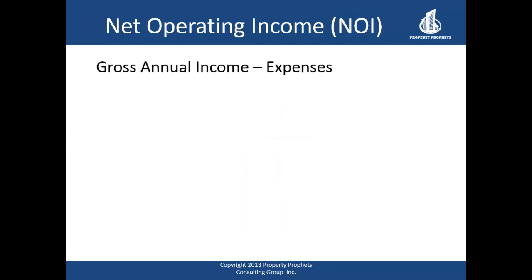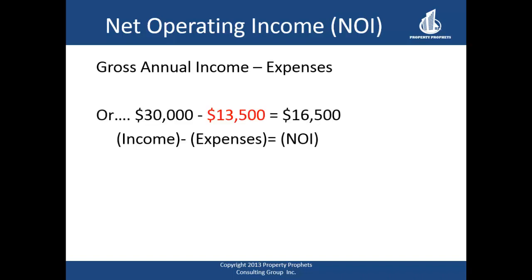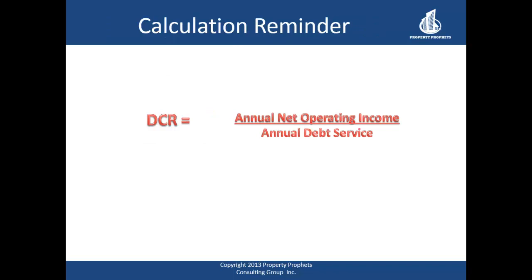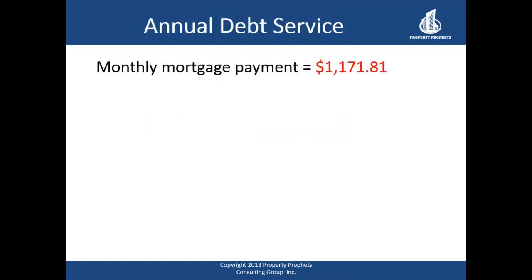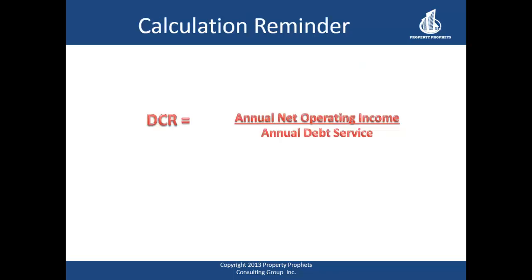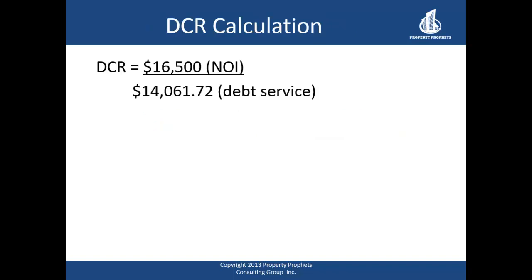Taking our annual gross rent of $30,000 minus total expenses of $13,500 gives us a net operating income of $16,500. For the denominator, our monthly mortgage payment of $1,171 multiplied by 12 gives an annual debt service of $14,061. Plugging these into the DCR formula: $16,500 divided by $14,061 gives a DCR of 1.17, which works for lenders requiring a 1.1 minimum but may fall short for those requiring 1.2.